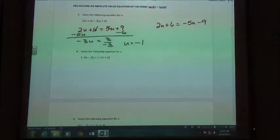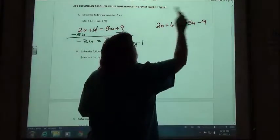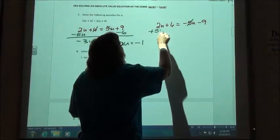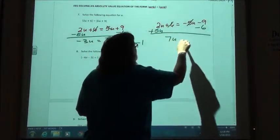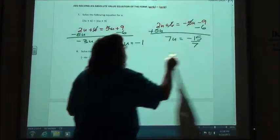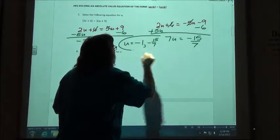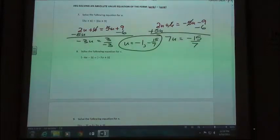Now sometimes we will get fraction answers and sometimes we'll get ones that don't work out, but in this case I've got one answer doing the other one. I am going to add my 5u and subtract my 6. So 7u equals negative 15, here I've got a fraction, and so negative 15 sevenths is going to be my second answer. So negative 1 and negative 15 sevenths.